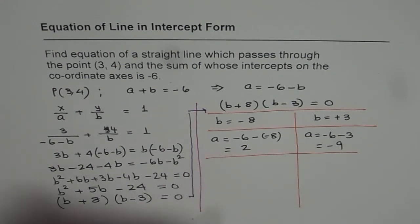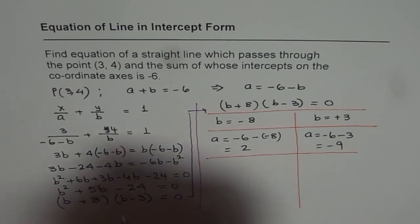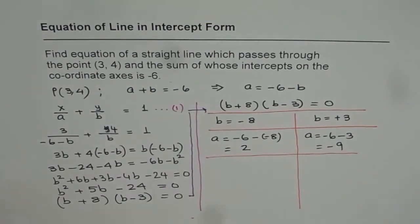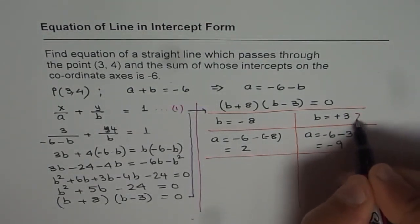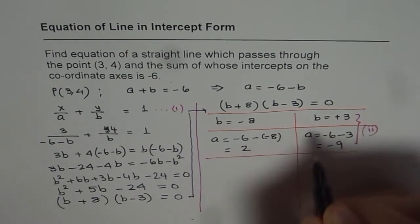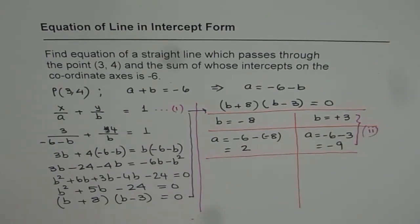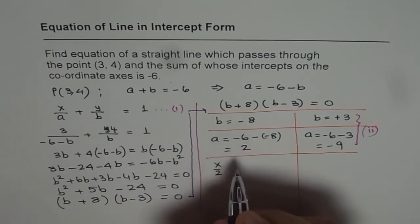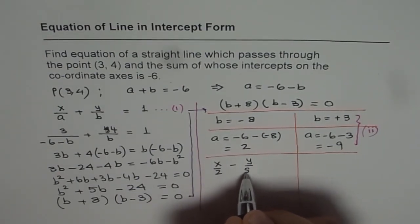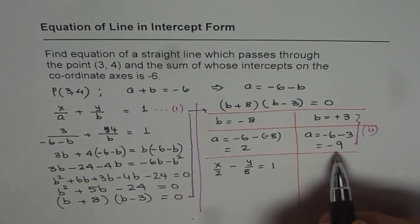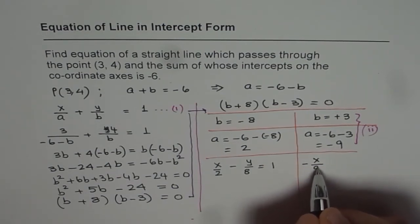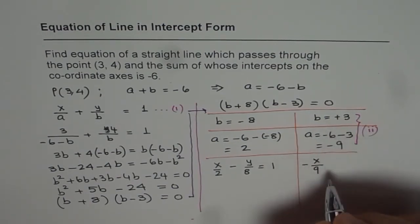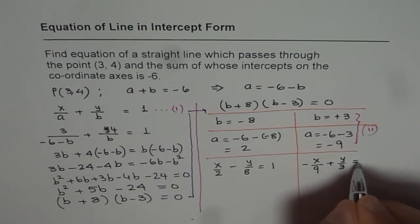Substituting these values of a and b in our original equation, let me say this equation 1, let me say this as 2. The combination of a and b points gives us two solutions, and our solutions are: if a is 2, x/2. y is -8, so we can write here -y/8 equals 1. The other one is a is -9, so let me write this as -x/9. y is +3 plus y/3 equals 1.